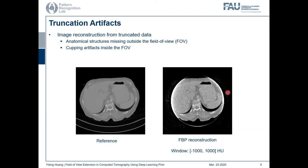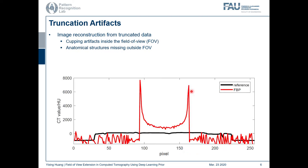Image reconstruction from truncated data directly with the standard filtered back projection method will suffer from artifacts. Here this is one reference image, and this is its FBP reconstruction from truncated data. We can see the anatomical structures outside the field of view boundary are entirely missing. In addition, the structures inside the FOV boundary have much brighter values. If we plot a line, we can see its intensities look like a cup — that is why these brightness artifacts are called cupping artifacts.